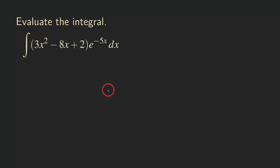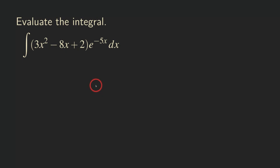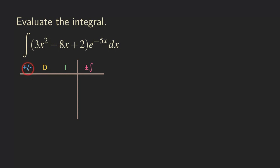Doing it twice will involve a lot of writing. But if we use the tabular integration by parts method — also called the row method or tablet method — we can simplify the process a lot. So let's set up the table. We have a sign column, a differentiation column, an integration column, and a note column to keep track of when we need to stop.